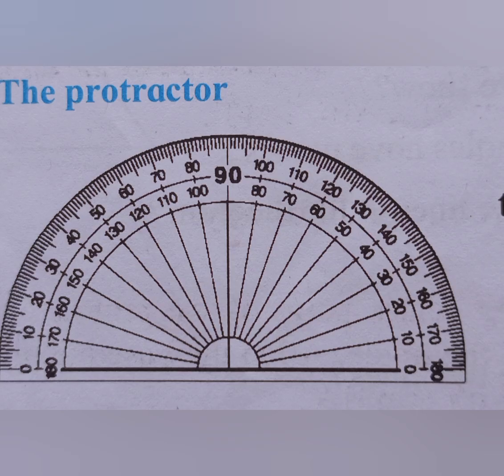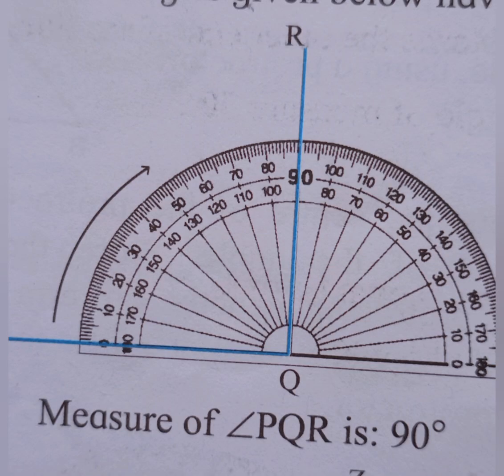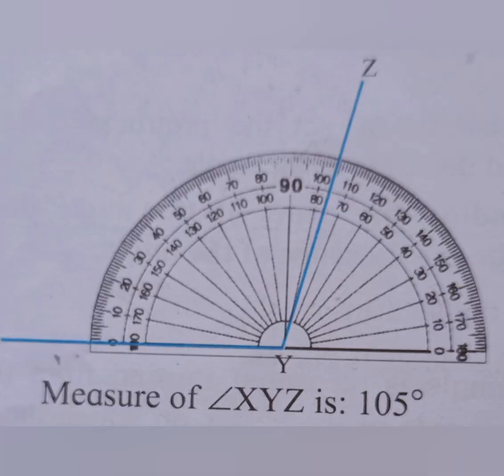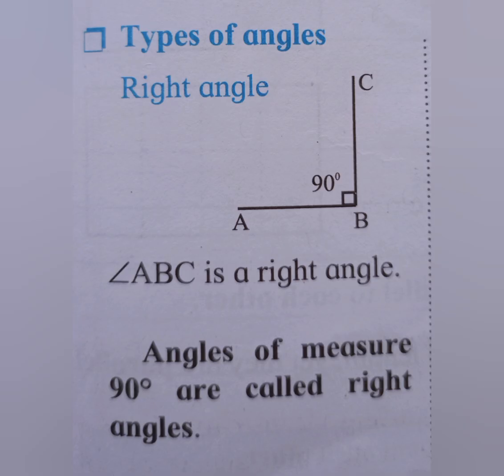Now we can see the protractor. How can you use a protractor? This is an acute angle. The measure of angle PQR is 90 degrees. The measure of angle LMN is 50 degrees. The measure of angle XYZ is 105 degrees. The measure of angle RST is 55 degrees.